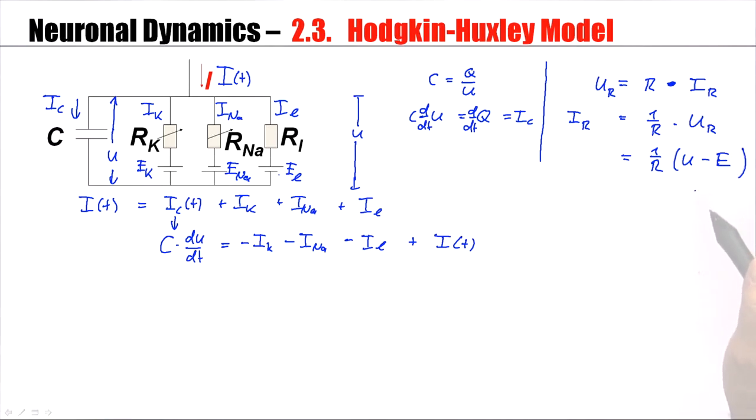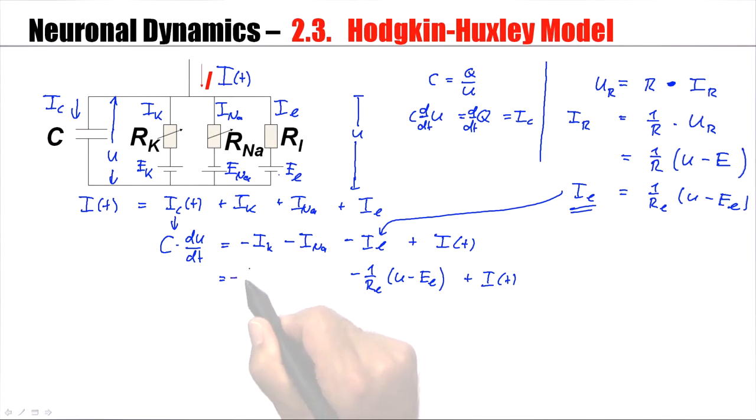Now, let's use this first for the leak current. So, I would have IL equals 1 over RL times (U minus EL), which I can plug in here. So, I have minus 1 over RL (U minus EL). The same reasoning can be applied to any other current. So, for the potassium current, I have minus 1 over RK (U minus EK). For the sodium current, I have 1 over RNa (U minus ENa).